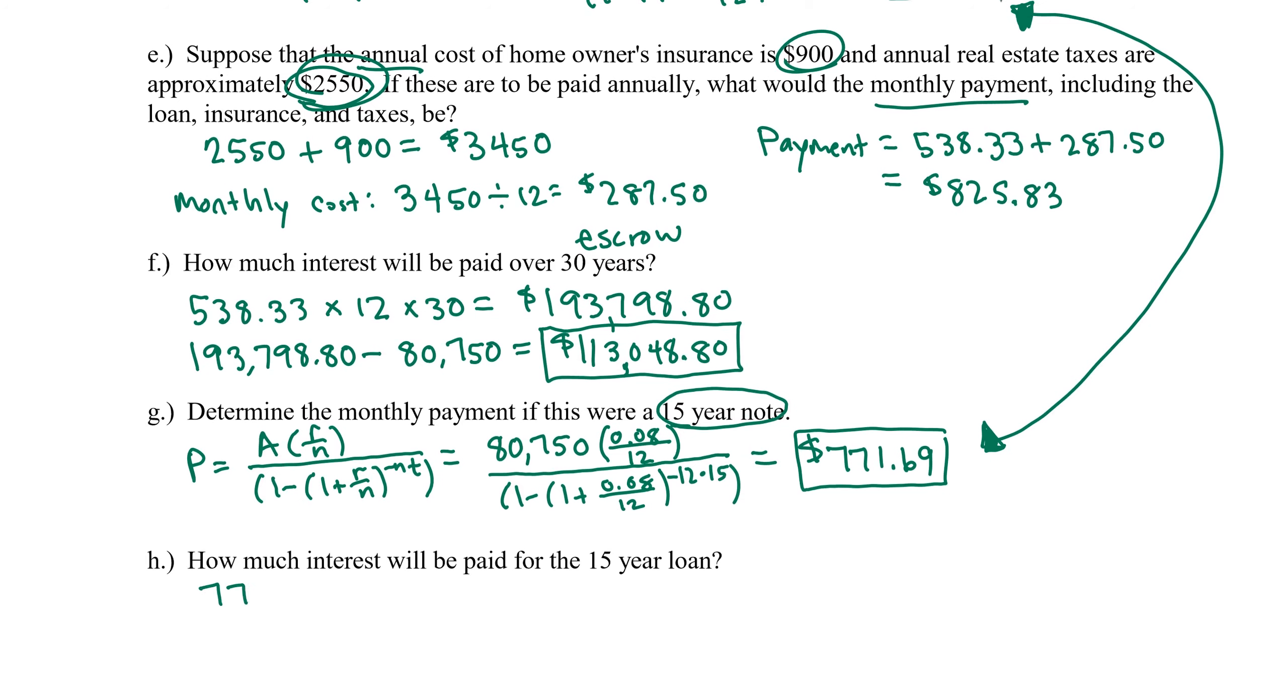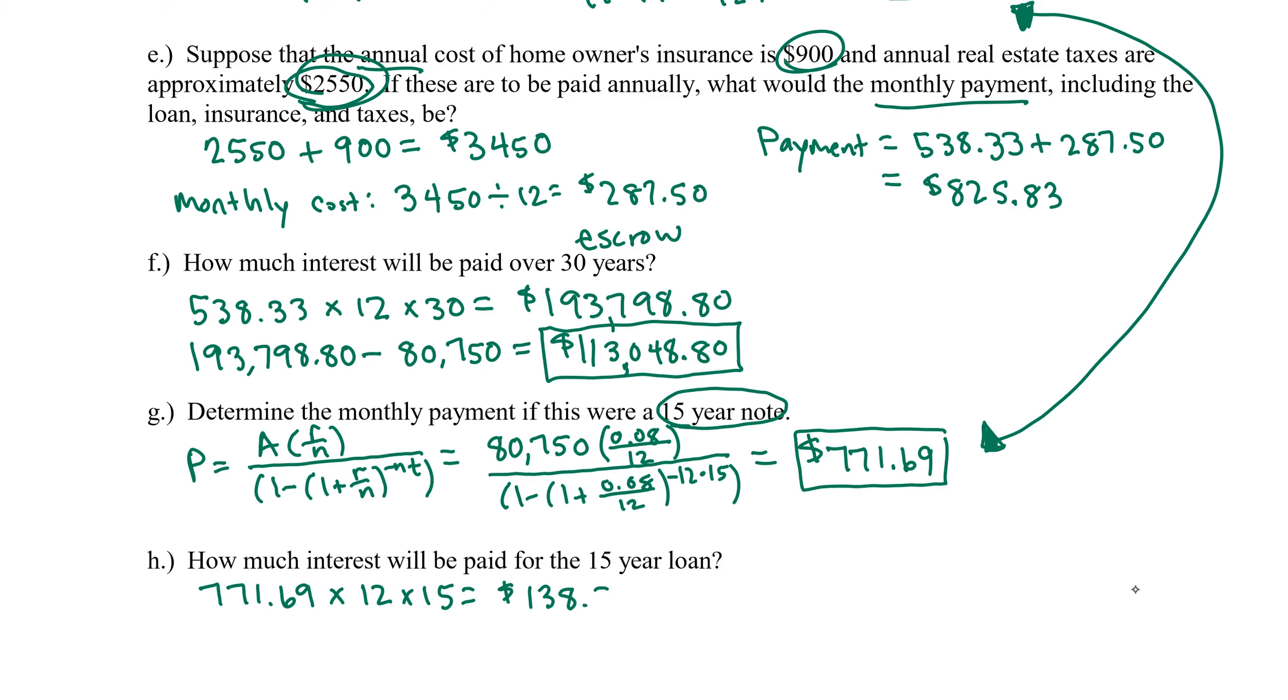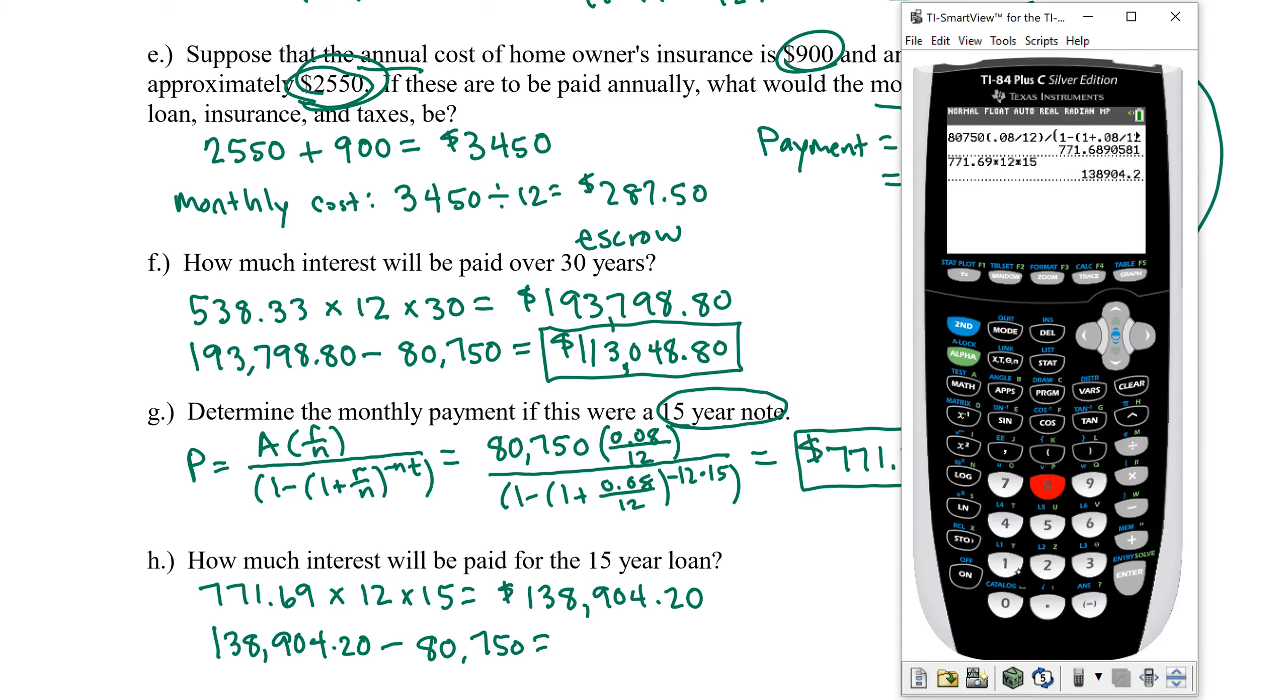Let's calculate how much interest we'll pay for this 15-year loan. So if we've been paying $771.69 12 times a year for 15 years, then the total cost of this loan, $771.69 times 12 times 15, gives us $138,904.20. $138,904.20. So that's the total cost of the loan. We want to know how much of that is directed to interest. So I'm going to take that total and I'm going to subtract $80,750, the amount that we actually borrowed.